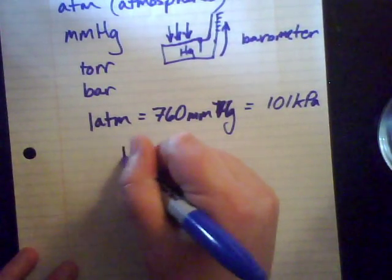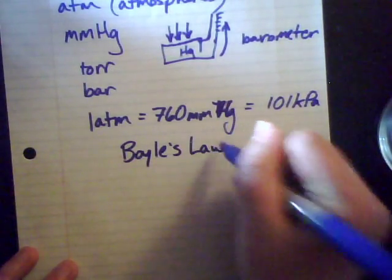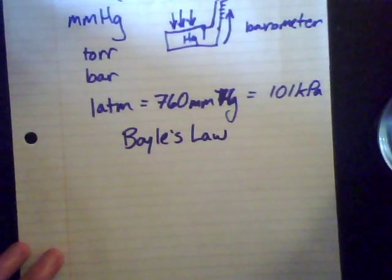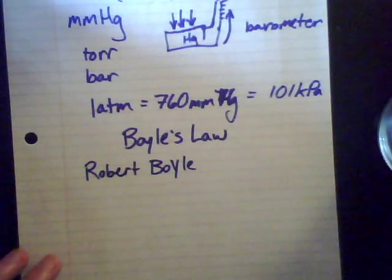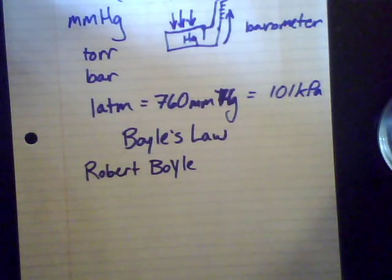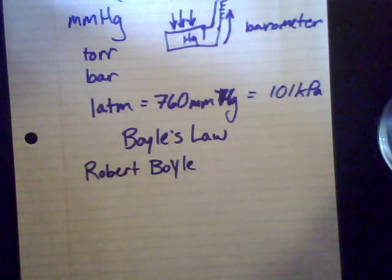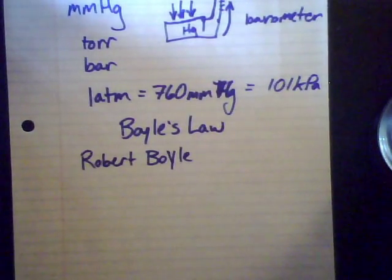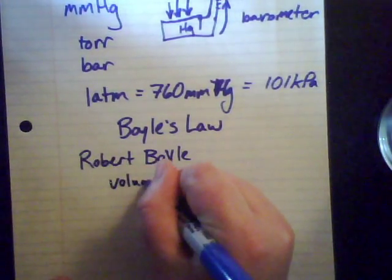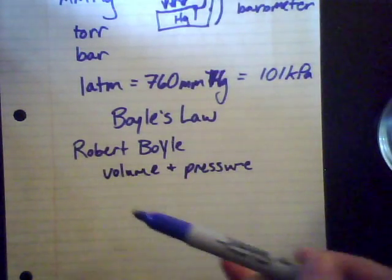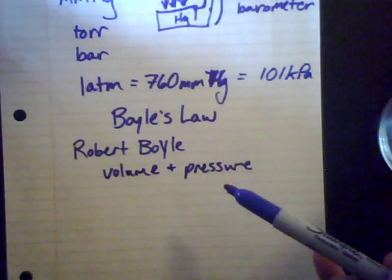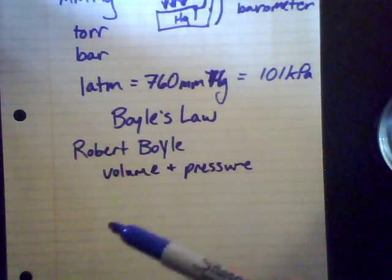Now let's start talking about Boyle's Law. Boyle's Law comes from one of the first chemists, Robert Boyle. He wrote a book called The Skeptical Chemist and was really involved in converting alchemy to chemistry — he and Lavoisier were really the fathers of modern chemistry. Boyle studied gases and was looking specifically at the relationship between volume and pressure: how the volume changed when you change the pressure, and vice versa.